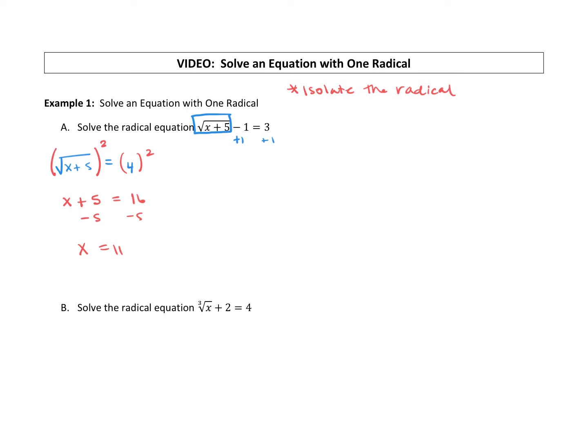The thing that happens sometimes with radical equations is you may, in your solving process, create what we call an extraneous solution. So all that that means is we're going to check our answers just to make sure that it actually is a solution. Does it work out in the original equation?